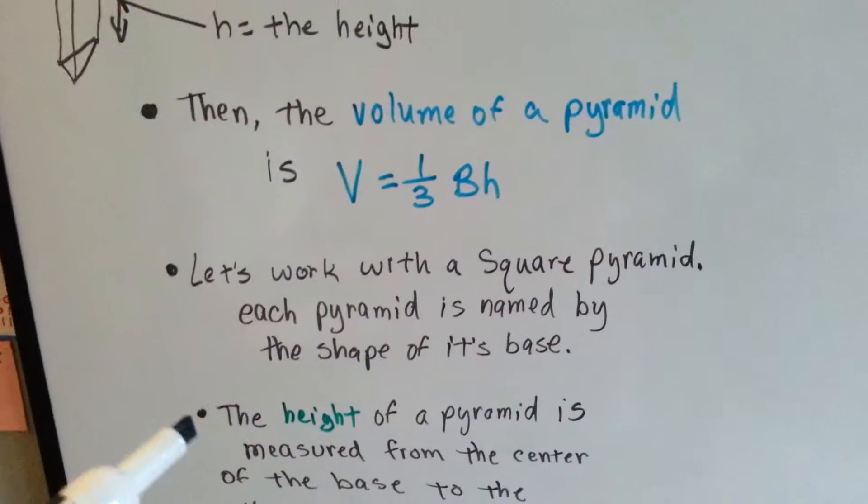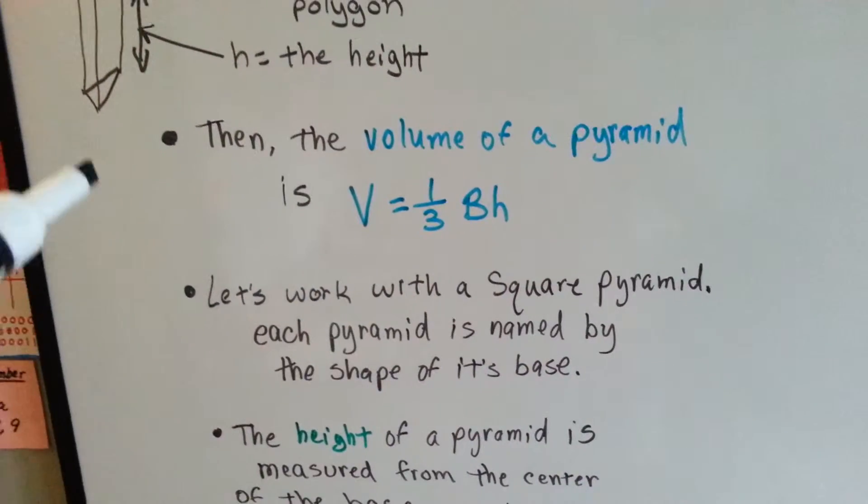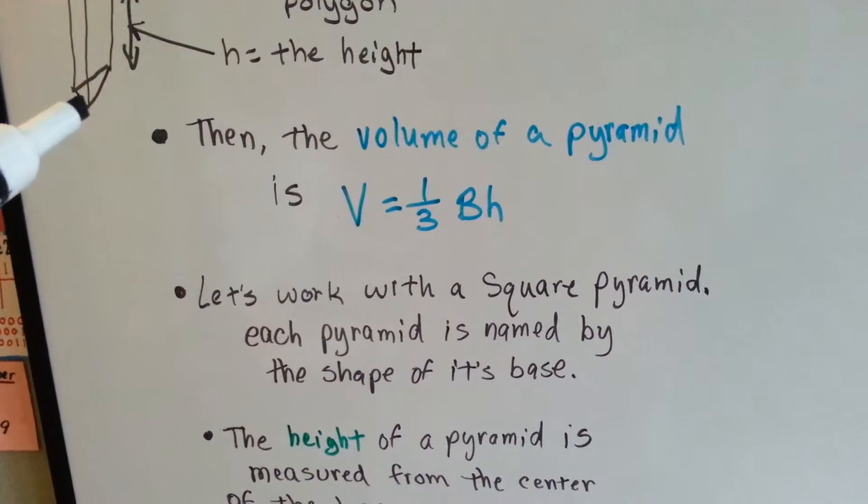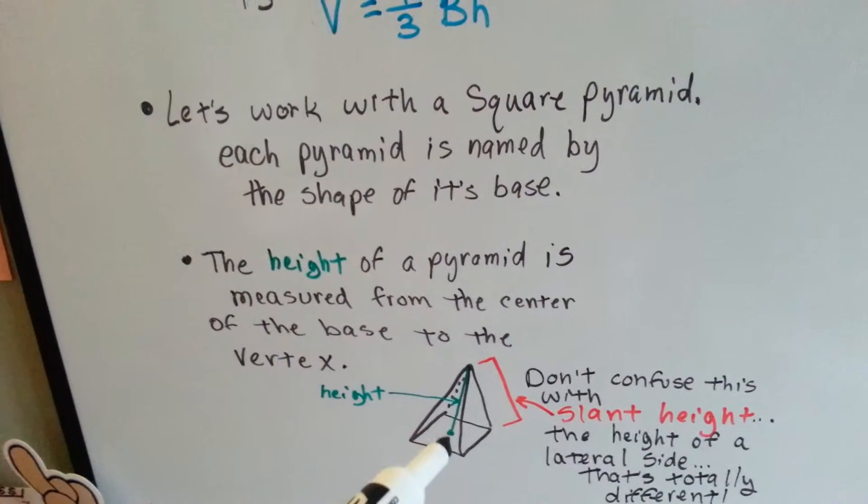Let's work with a square pyramid. Each pyramid is named by the shape of its base. This would be a triangular pyramid. So a square pyramid is going to have a square base, like this.